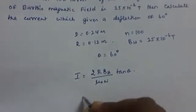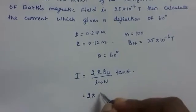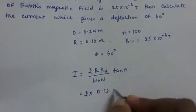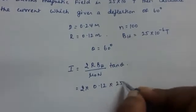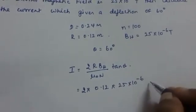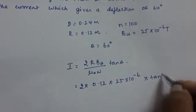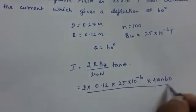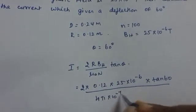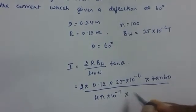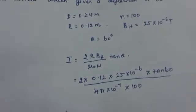Now I will substitute here. It is 2 into r value is 0.12, Bh value is 25 into 10 raised to minus 6 into tan theta, tan 60, divided by mu 0 value is 4 pi into 10 raised to minus 7 into n value is 100.